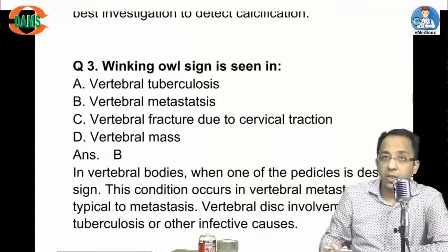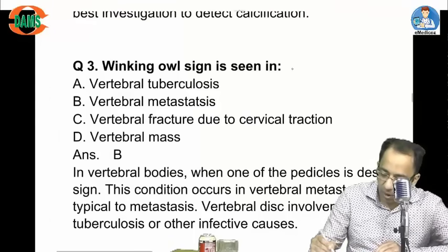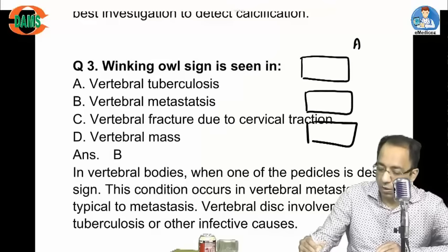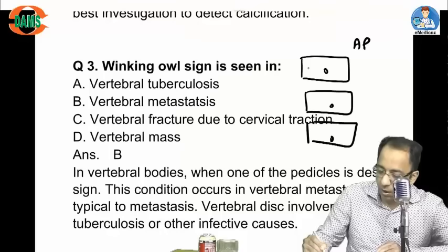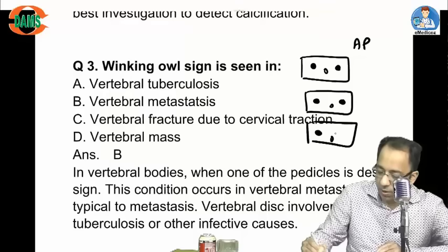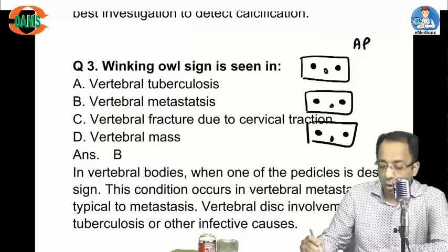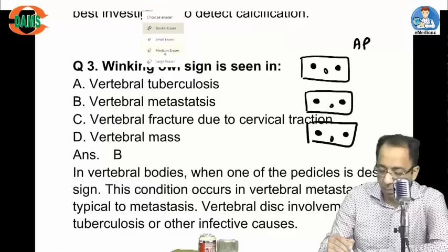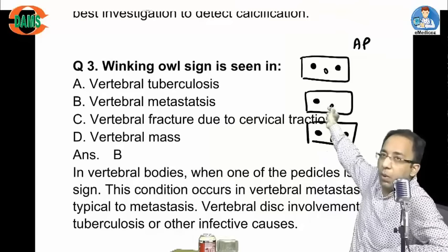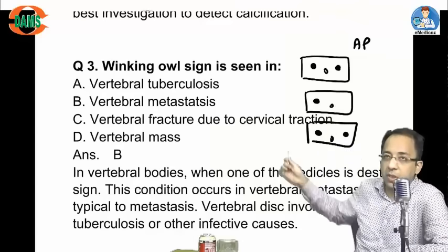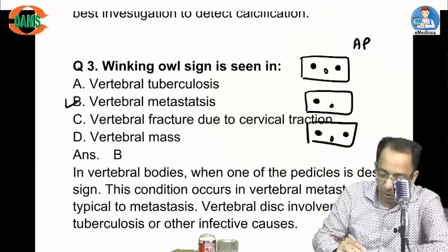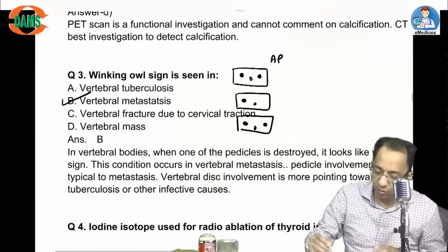Winking owl sign: on an AP view of the spine, you can see the spinous process in the middle and the pedicles on either side. Vertebral metastasis causes destruction of one pedicle. When one pedicle is destroyed, the vertebra looks like an owl winking at you. So winking owl sign is seen in vertebral metastasis due to involvement of the pedicle.